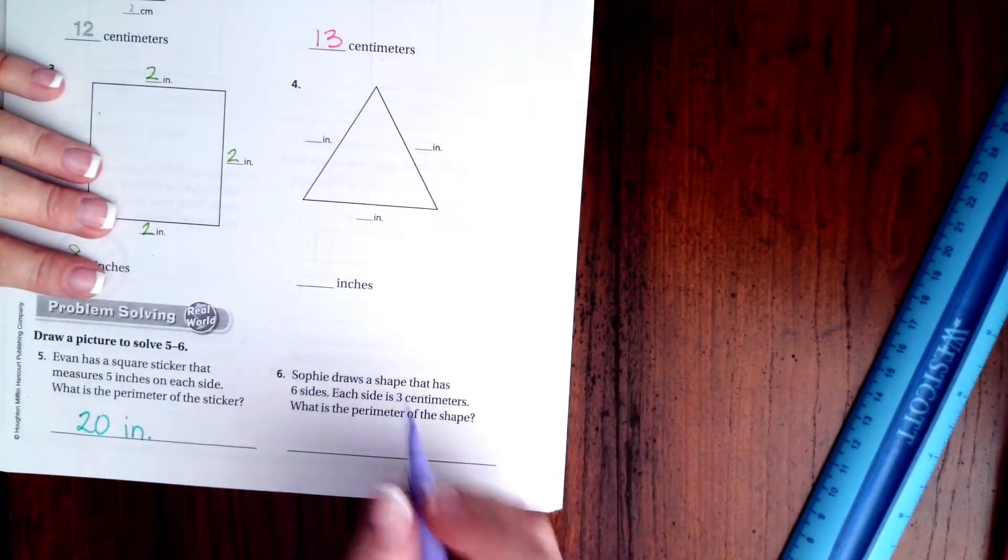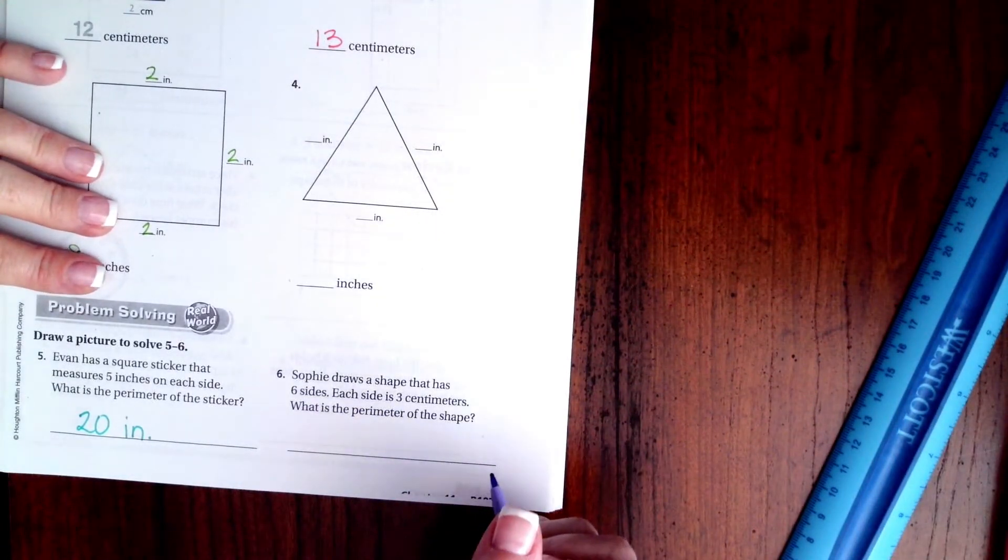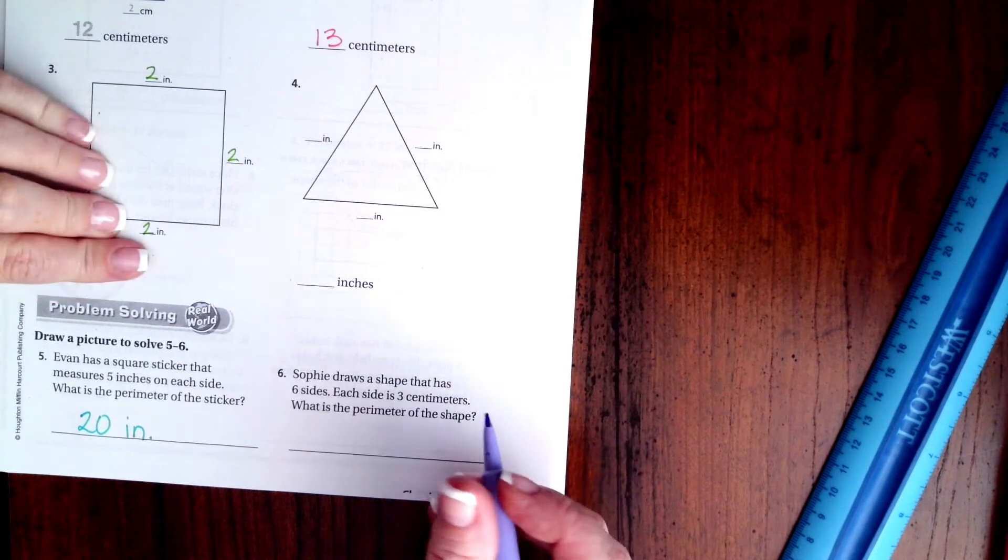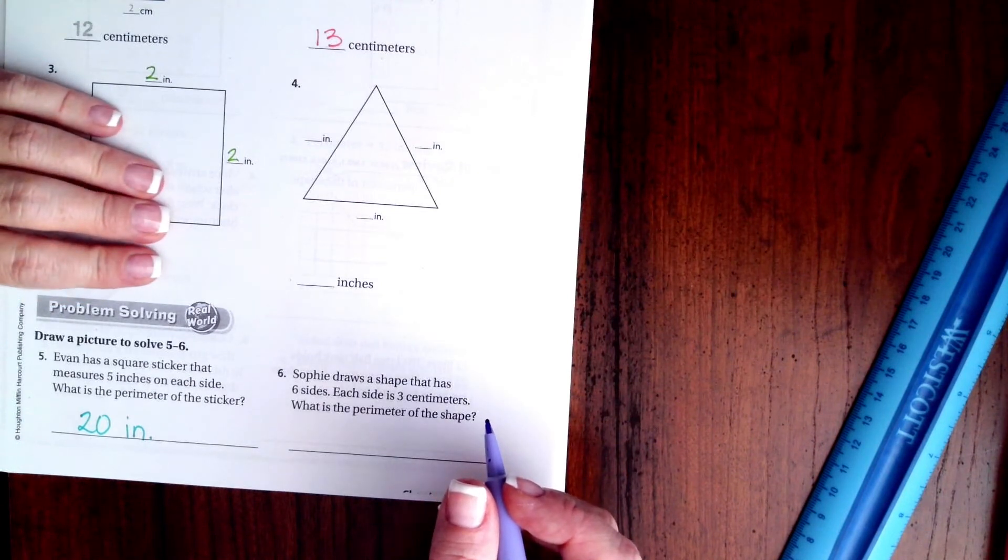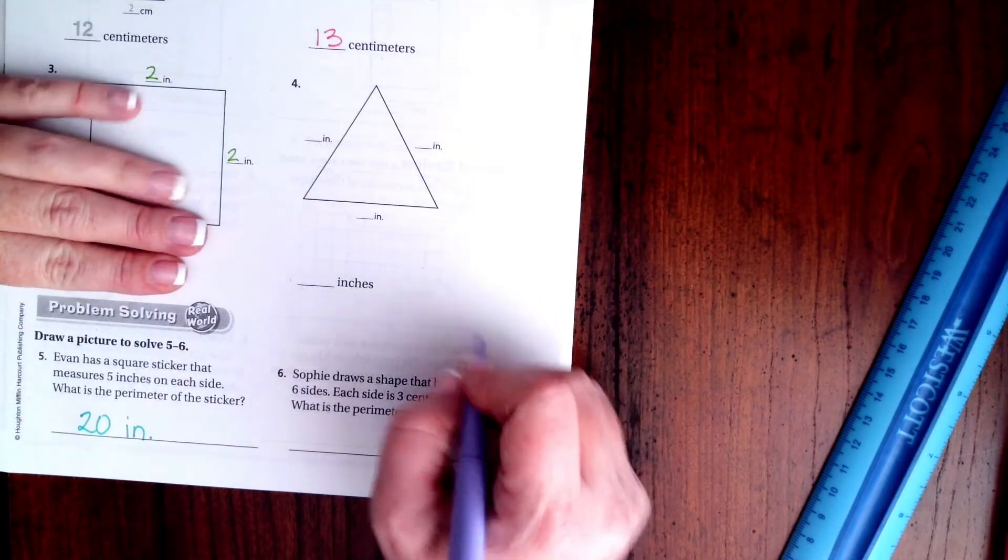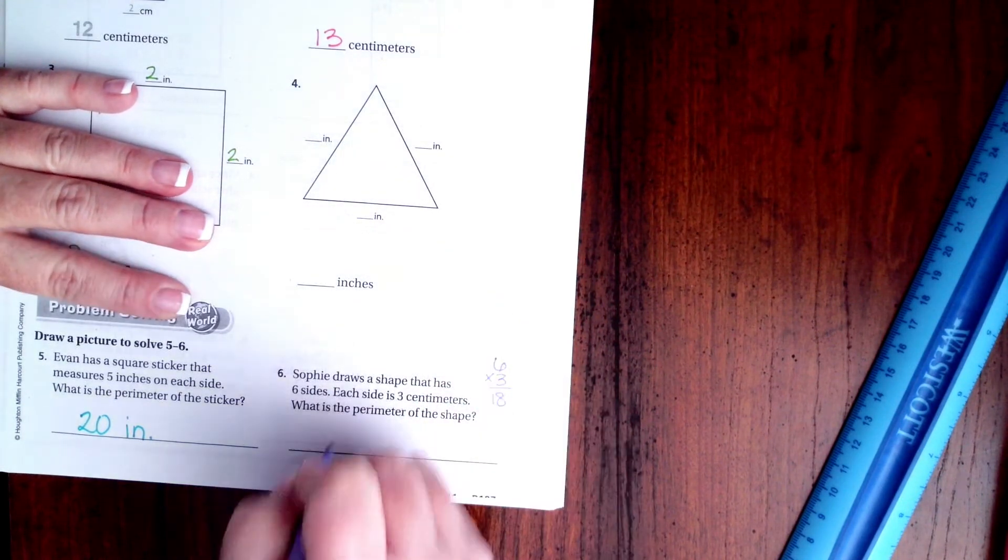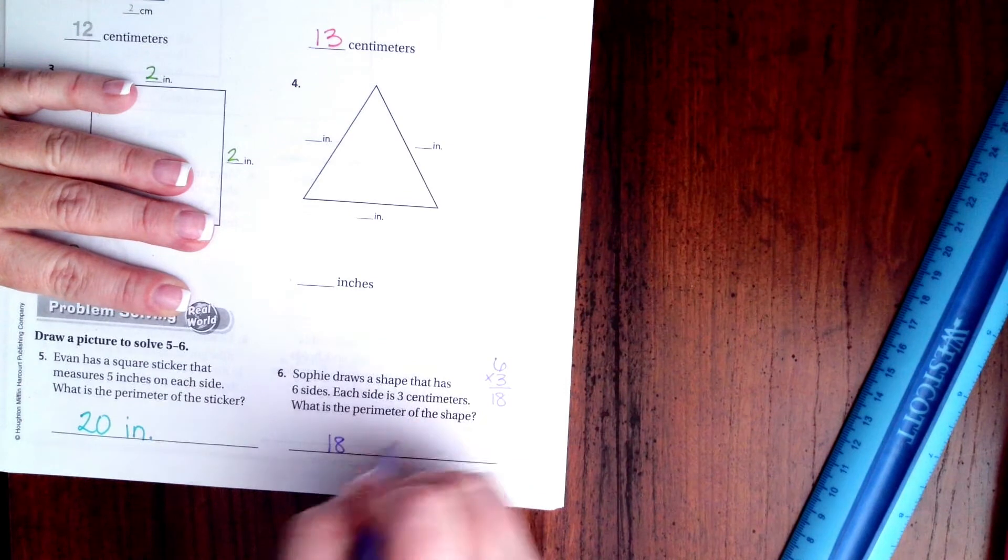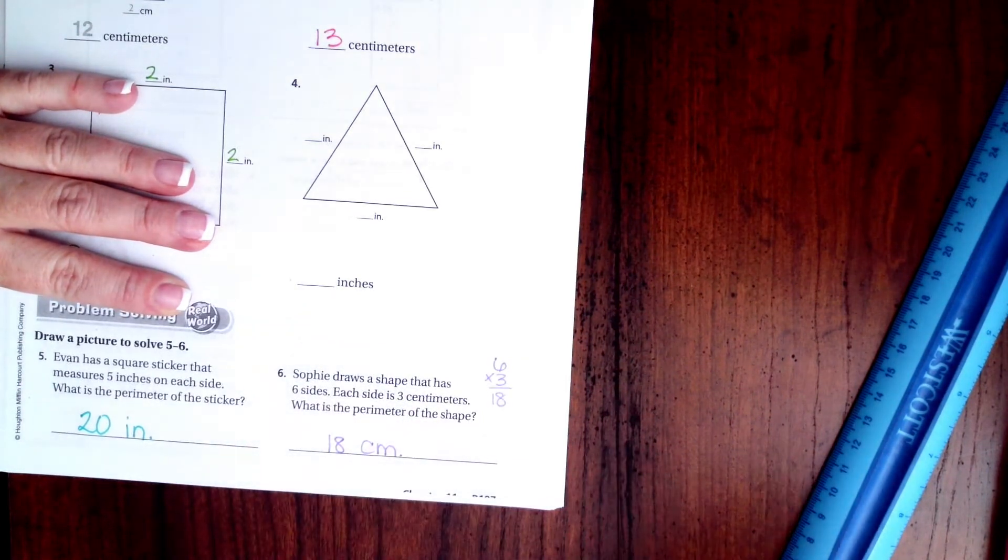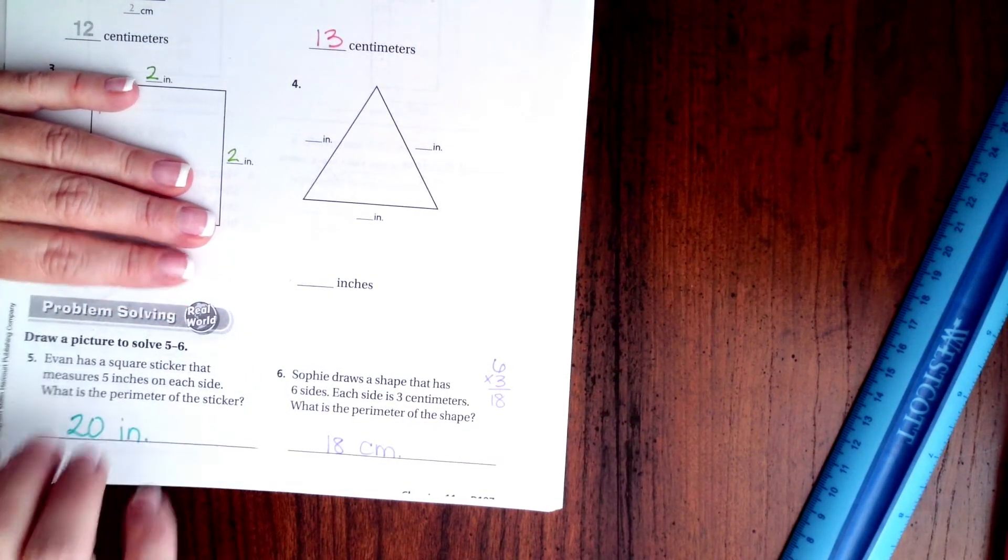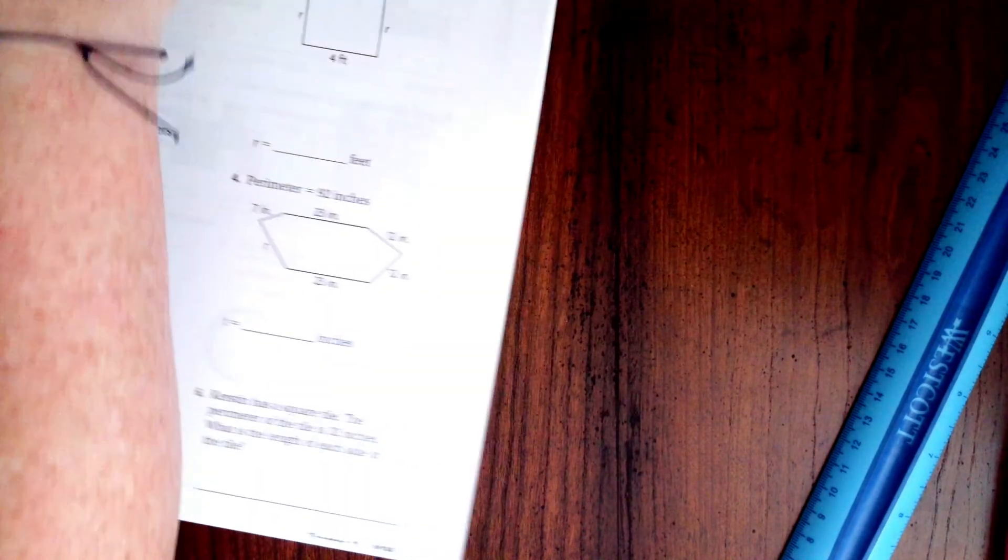All right, we're going to do number six. Sophie draws a shape that has six sides, a hexagon, each side is three centimeters. What is the perimeter? So all we're going to do is six times three, which I happen to know is eighteen. So eighteen centimeters. We are going to go on to the back where you guys are going to do the lesson check, and we're going to go down and do this part of review.